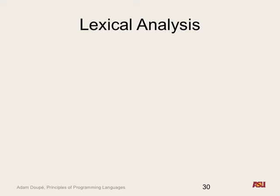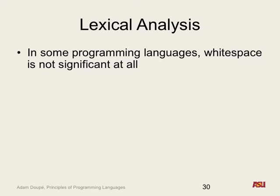So in some programming languages, white space is not significant at all. In different programming languages, when you have spaces in between tokens, those could maybe specify white space - that's how you differentiate between two tokens, like between a number and an identifier. Like normal programming languages.